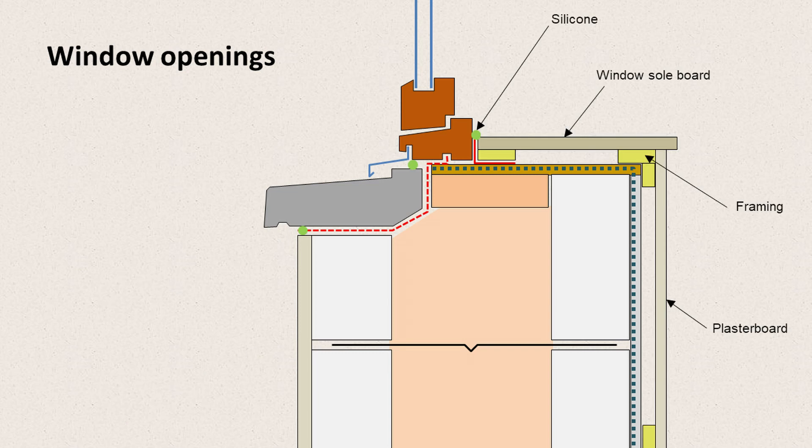Internally we would install some small framing elements in softwood, and onto the face of the wall we would install plasterboard. Onto the top part we would install a sole board — sometimes called a window sill, though to me the sill is the outside element and the sole board is the inside one.